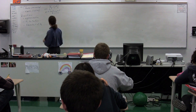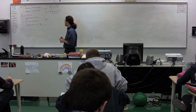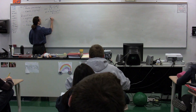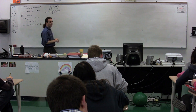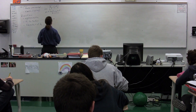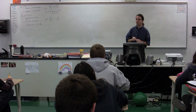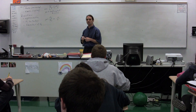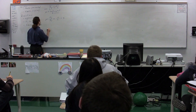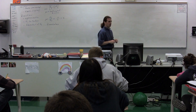Let's get the dimensions for the coefficient of friction. If you solve for mu, you get force of friction divided by force normal. The force of friction is in newtons and the force normal is also in newtons. When you divide newtons by newtons, you get nothing — no dimensions. So this is our first dimensionless number. The coefficients of friction are dimensionless.